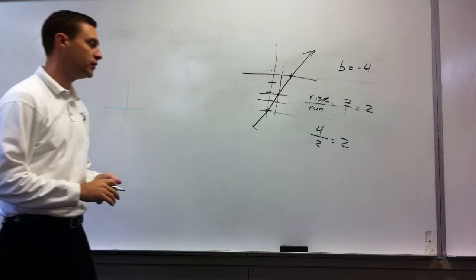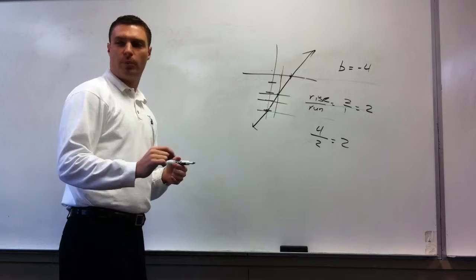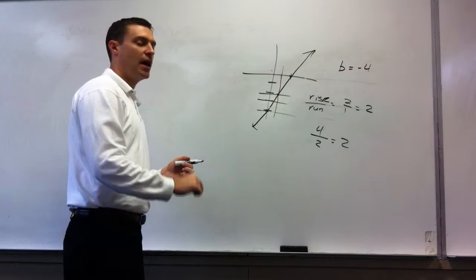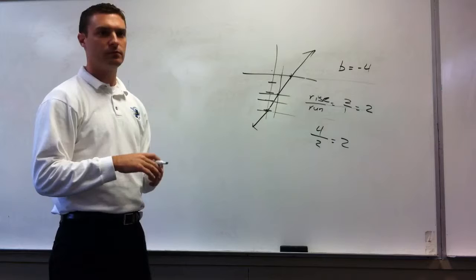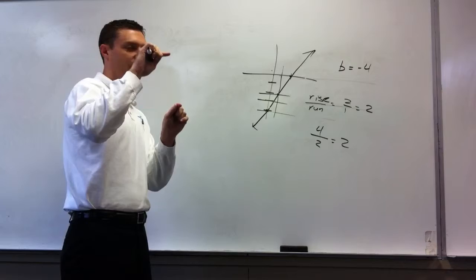So to write an equation in slope-intercept form, you need what two things? The slope and the y-intercept. How do you find the y-intercept? Look where the line crosses the y-axis. And then to find the slope, what do you do? Rise over run. Find two points that are on intersections on the graph. And then you can do rise over run.